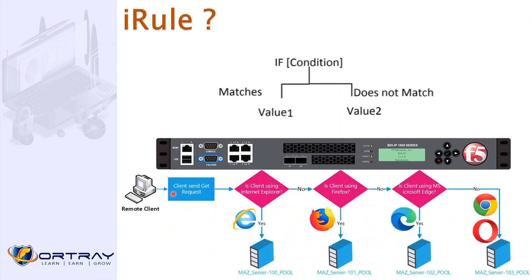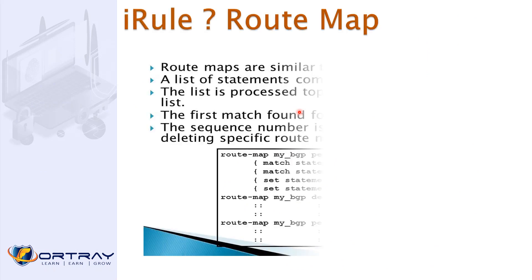Here's a practical day-to-day example, which will also be our lab scenario. You have four servers: 100.100.100.100 through .103. If a GET request comes in and the client is using Internet Explorer, it's served by .100. If using Firefox, served by .101. If using Edge, served by .102. If using Chrome or Opera, served by .103. This illustrates the if/match value logic of iRules.